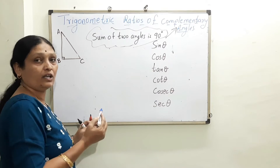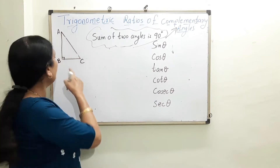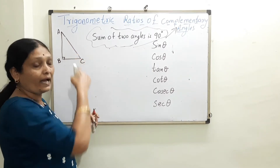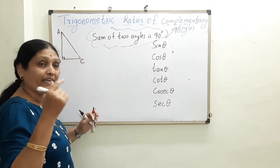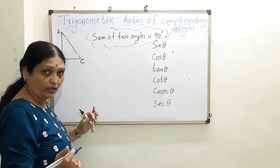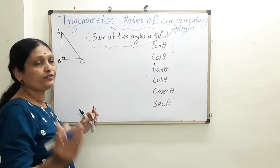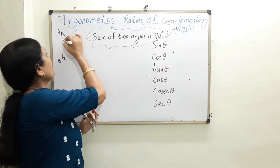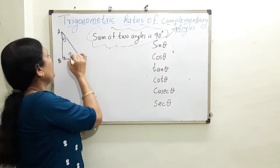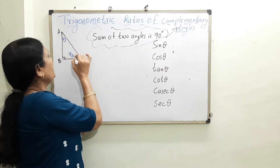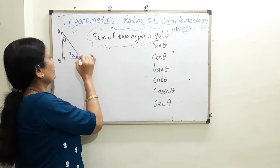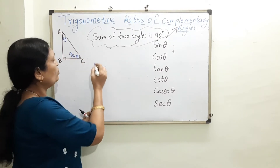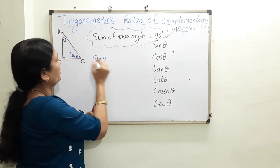Now we have a right triangle. In a right triangle, one angle is 90 degrees, so the other two angles will definitely add up to 90 degrees, because the sum of three angles of a triangle is 180. So if I take one angle as θ, the other is going to be 90 minus θ. These two are acute angles.